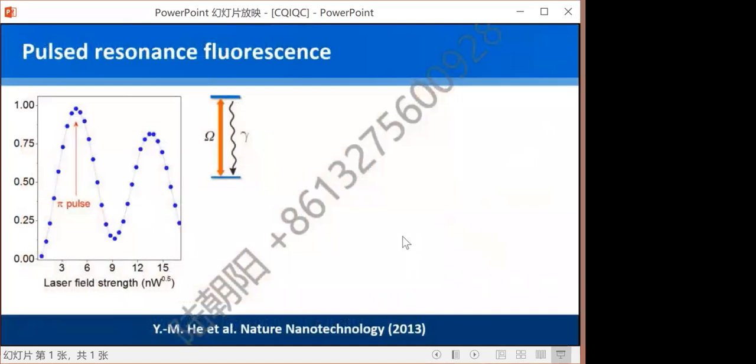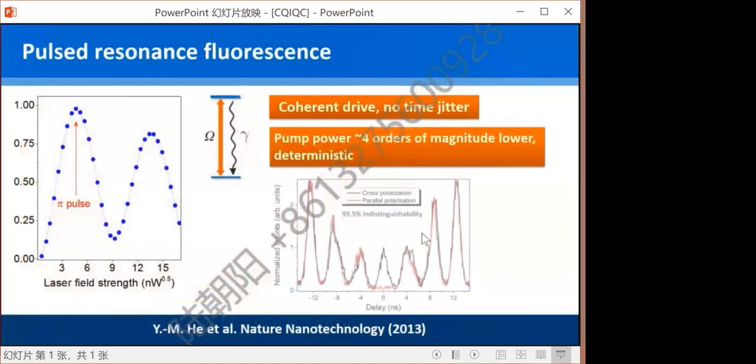First, we need to fix the indistinguishability of the single photon source. For quantum dot source, it usually is generated relying on the method of optical excitation. Previously, the predominantly used method is non-resonant excitation, which caused uncontrolled time jitter and electric field fluctuation, which fundamentally limited the two-photon interference visibility below 60%. To solve this problem, we developed pulsed resonant excitation, which directly drives the two-level system and avoided the time jitter. The pi-pulse laser power is only a few nanowatts, which is four-order magnitude lower than non-resonant excitation. With this, the photon indistinguishability was increased to 96.5%.